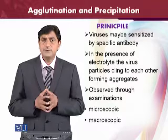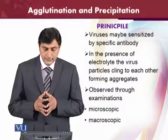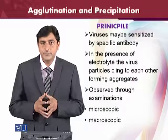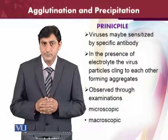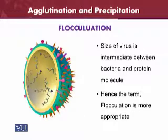The agglutination and precipitation can be observed both microscopically and macroscopically. We will see how to observe virus agglutination and precipitation with and without the microscope. The term flocculation is most accurate and appropriate for viruses because the size of the virus is between that of a protein molecule and a bacterium.